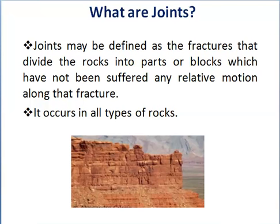Joints occur in all types of rocks — igneous, sedimentary, and metamorphic. We may find quite large portions of outcrop of any of these rocks practically free from joints at some places, but at other places the same type of rocks may be heavily jointed.